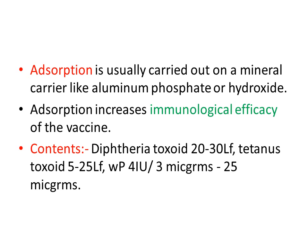DPT is mainly of two types. In one type there will be whole cell Pertussis, and in the other type there will be Acellular Pertussis. Acellular Pertussis is not used in primary doses — in children, only whole cell Pertussis is used. So here we will discuss only about whole cell Pertussis.